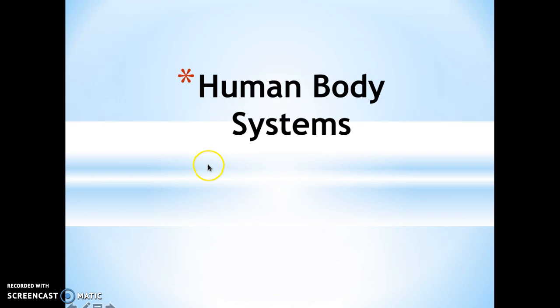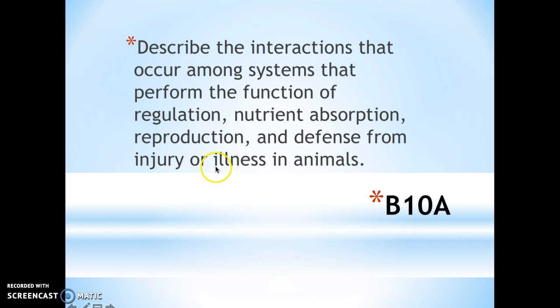The main purpose of this video is that you take notes on the functions of each body system. However, we're going to spend a little bit of time talking about how body systems interact with one another, so that you need to be able to describe the interactions that occur among systems that perform the functions of regulation, nutrient absorption, reproduction, and defense from injury or illness in animals.